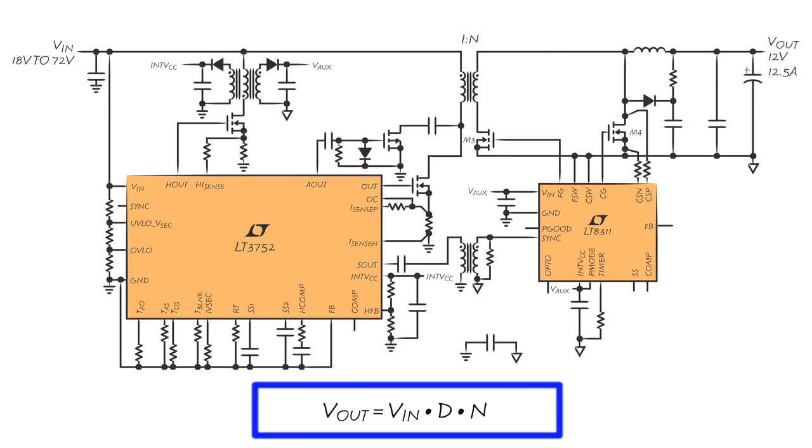VIN is the input voltage, N is the secondary to primary turns ratio, and D is the duty cycle. The duty cycle clamp on the output pin of the LT3752, LT3752-1, and LT3753 inversely tracks VIN to maintain constant VOUT over the input voltage range.